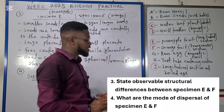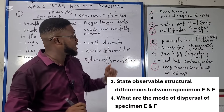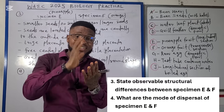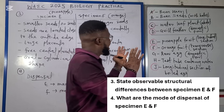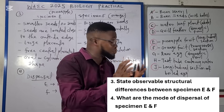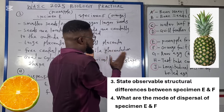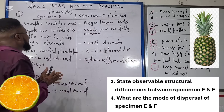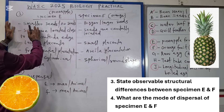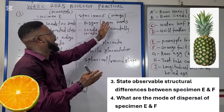Moving on to the next question: state the observable structural differences between specimen E and specimen F — differences we can actually see physically. Specimen E, the pineapple, has smaller seeds or no seeds, while specimen F, the orange, has bigger or larger seeds.